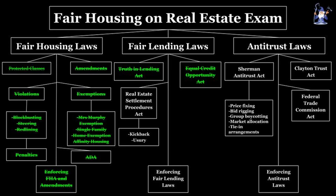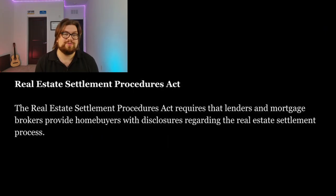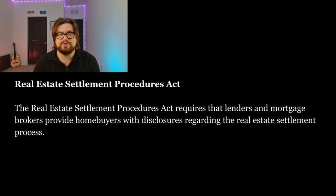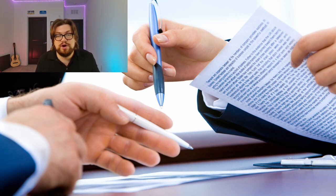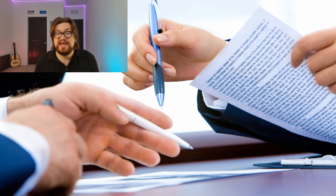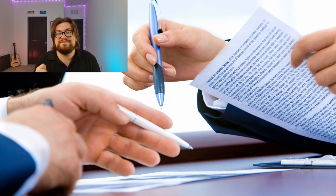Another essential fair lending act is the Real Estate Settlement Procedures Act. RESPA, or the Real Estate Settlement Procedures Act, requires that lenders and mortgage brokers provide homebuyers with disclosures regarding the real estate settlement process. This act, also known as Regulation X, protects homebuyers from predatory lending agreements. A real estate settlement service helps homebuyers with the closing process after purchasing a home — these organizations generally provide title insurance or offer escrow services. Before RESPA, there were very few laws regulating these types of services, meaning lenders could get away with abusive behaviors including predatory loan terms. RESPA was passed in 1974 to protect borrowers from these practices.